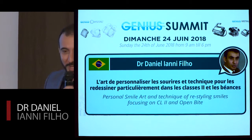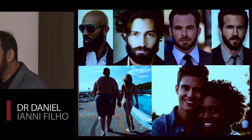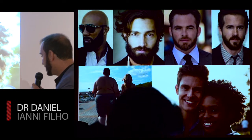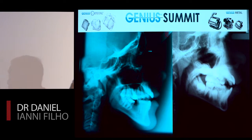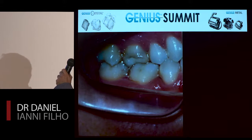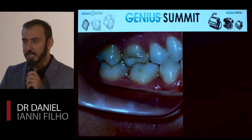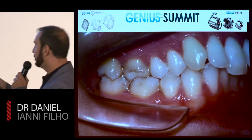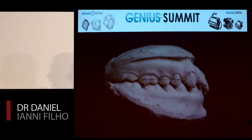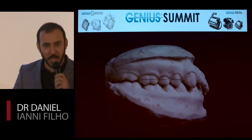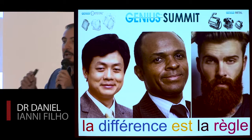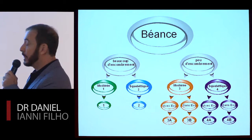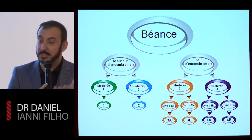Let's speak about individualizing some things. Why? Because we are different. You have different styles, different desires, different choices, we have different morphologies, different smiles. Inside the mouth, in one arch, the posterior teeth can be different from the anterior teeth — look smaller and higher. The first premolar is a different size than the second premolar. Difference is the rule. We are totally different.